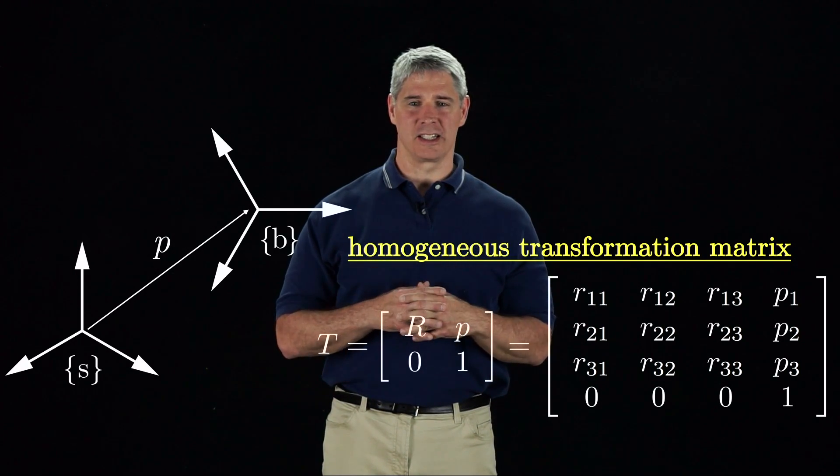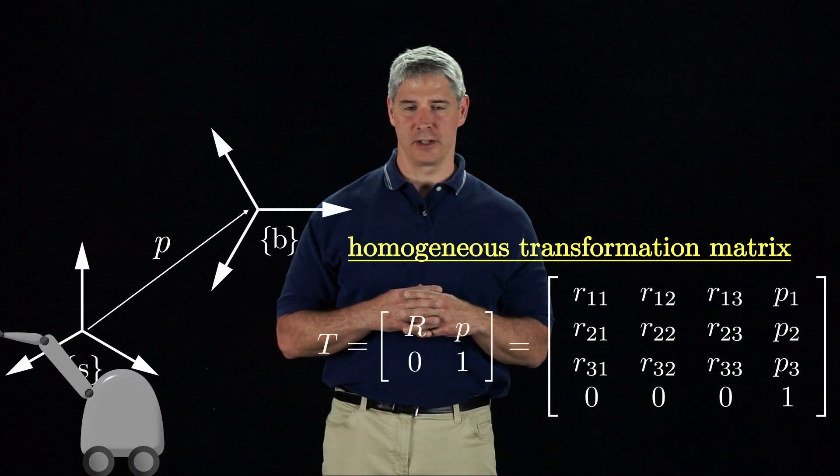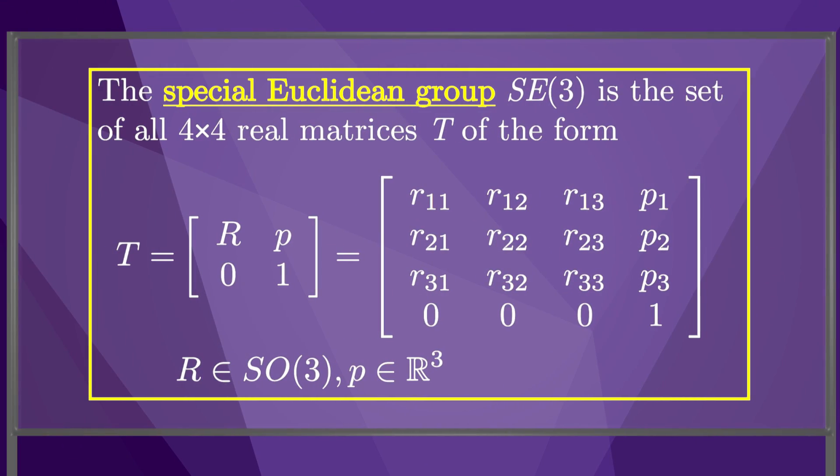The bottom row, which consists of three zeros and a one, is included to simplify matrix operations, as we'll see soon. The set of all transformation matrices is called the special Euclidean group, SE.